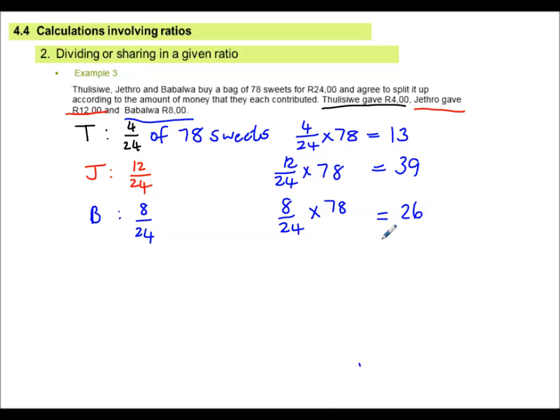The important thing here to remember is if I add up 13, 39 and 26, I must get to 78 sweets. Because we had 78 to start with and we are going to share the 78 amongst us. So if I share them out, I've got to be able to get back to my original or my whole amount.